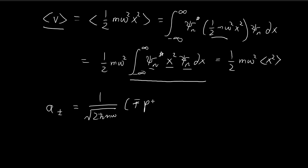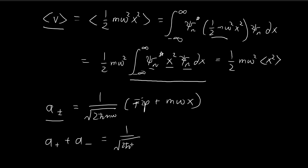Recall that the definition of these operators is given by this expression over here. We're going to express x in terms of a+ and a-, and then substitute that alternate expression straight into the formula, and most of the complications will disappear. To express x in terms of these operators, we first consider the sum of a+ and a-. For a+, this is going to be equal to minus ip plus mωx.